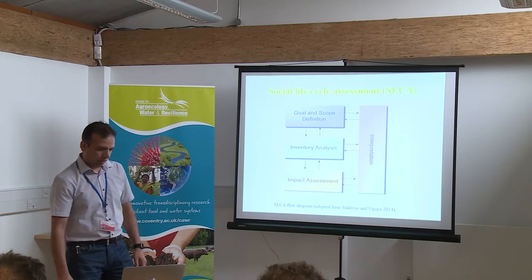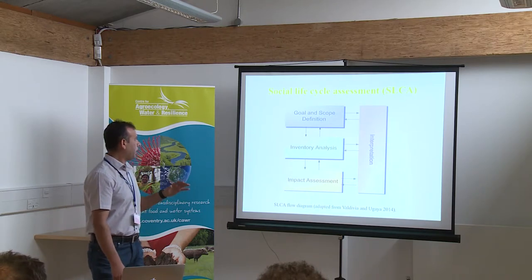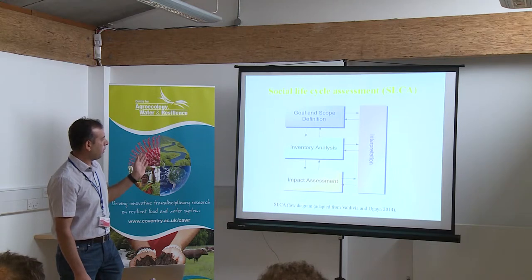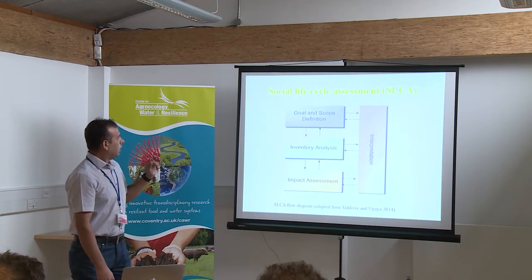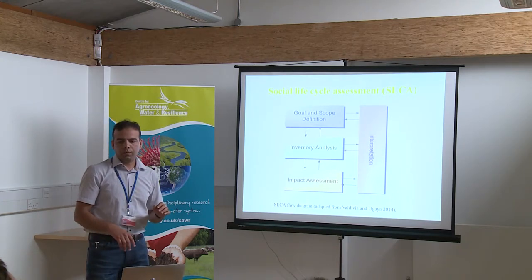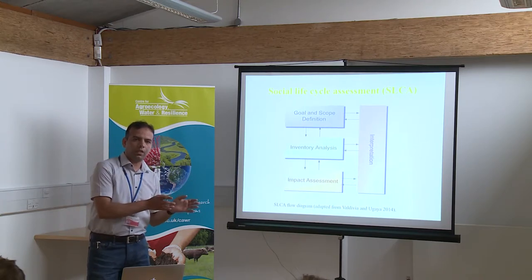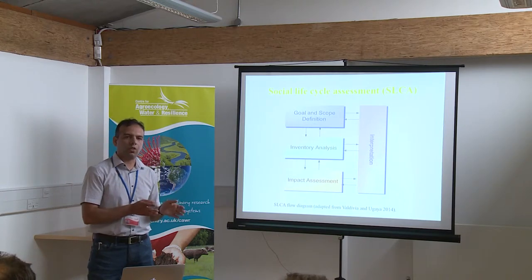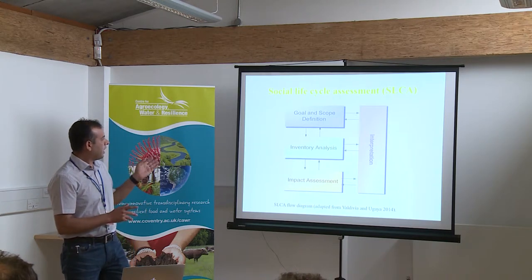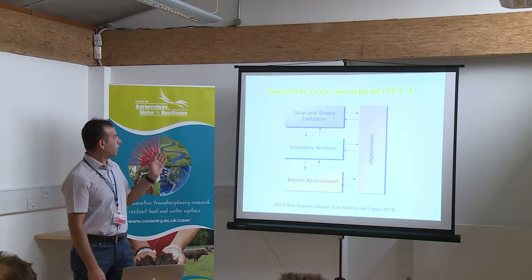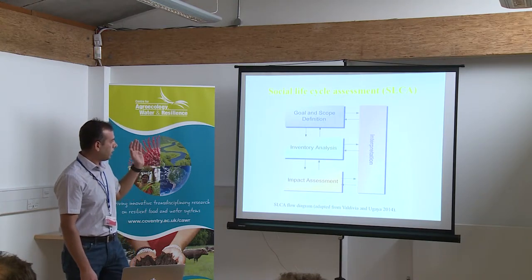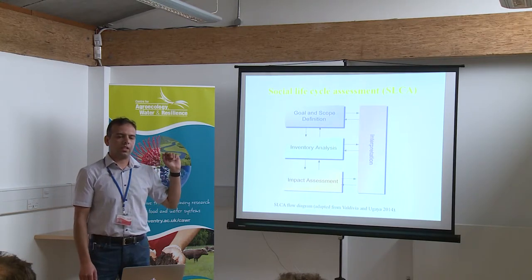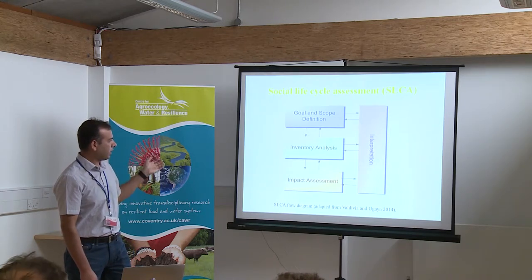SLCA has four main stages. The first stage is goal and scope, where we choose the boundary of the study — what to include and exclude — and select the characterization model. The second stage is inventory data collection, where the framework developed in the goal and scope stage is applied. The characterization model selected in stage one is then applied in the third stage, impact assessment, followed by the fourth stage, interpretation of data.